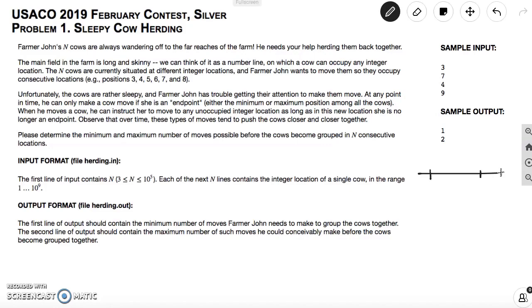Unfortunately, the cows are rather sleepy and Farmer John has trouble getting their attention to make them move. At any point in time, he can only make a cow move if she is an endpoint, either the minimum or maximum position among all the cows. When he moves a cow, he can instruct her to move to any unoccupied integer location, as long as in this new location she is no longer an endpoint. Observe that over time these types of moves tend to push the cows closer and closer together.